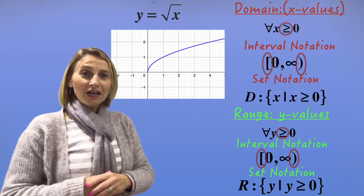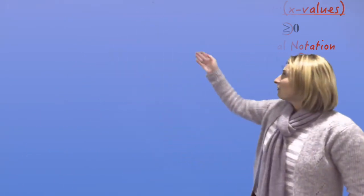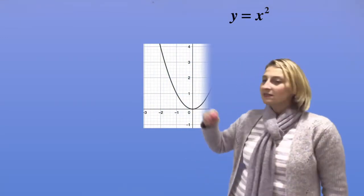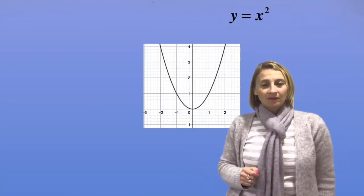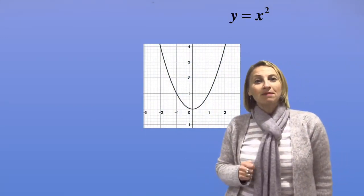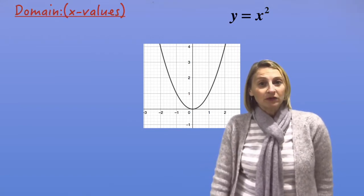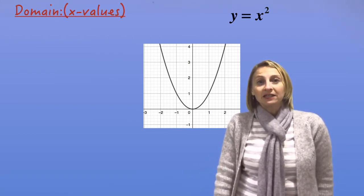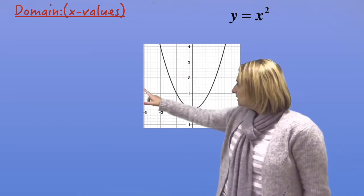Let's have a look at another one: y equals x squared — a nice parabola. Think about what's the domain — the possible x values. What can x be in this graph? Well, x can be 0, negative 1, negative 2, negative 3, 3, 4 — x can be anything. So if x can be anything, then we want all real x.